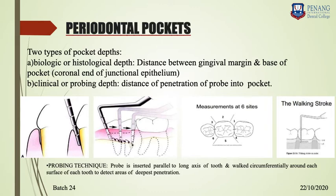The probing technique requires you to evaluate the pocket on all six sides of a tooth: mesiobuccal, midbuccal, distobuccal, mesiolingual, midlingual, and distolingual. You have to walk the probe — you cannot simply run it along inside the pocket. Take the probe out after probing one side and move it to the next. If you run the probe, you move it laterally from a deeper side to a shallow side.